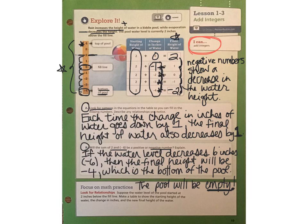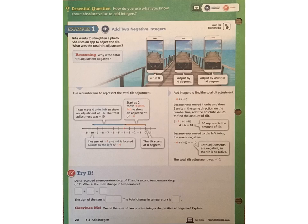Next, let's take a look at example one. The essential question in this lesson says, how do you use what you know about absolute value to add integers? Example one, we are going to look at adding negative integers together. So more than one negative number put together. Nita wants to straighten a photo. She uses an app to adjust the tilt. What was the total tilt adjustment? So you can see here in the three pictures that she is adjusting it based on where it currently is and how to remove that tilt in her picture.